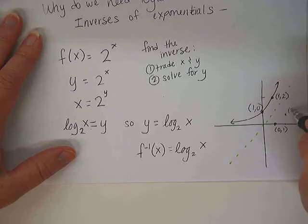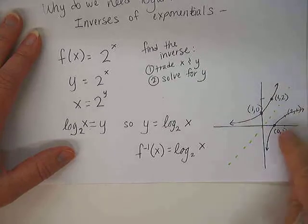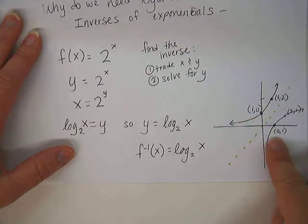so the inverse trades our x's and y's, so our point 1, 0 is 0, 1, and our point 1, 2 is 2, 1.